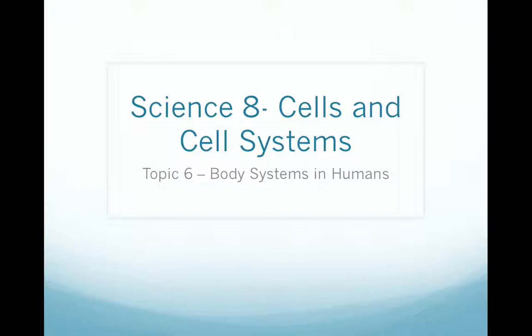We've talked about cells and how cells work together to form tissues. We have multiple tissues that form our organs — things such as epithelial tissue, connective tissues, muscle tissues, and nerve tissues. That's how our body functions. These tissues form organs, and then organs form organ systems, and systems are how living organisms function.